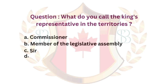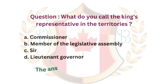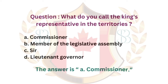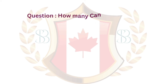Question. What do you call the king's representative in the territories? a. Commissioner. b. Member of the Legislative Assembly. c. Sir. d. Lieutenant Governor. The answer is a. Commissioner.